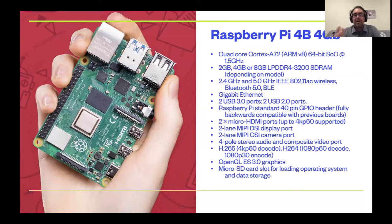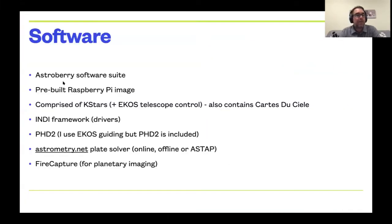The Raspberry Pi is a wonderful little piece of kit — quite incredible to have a fully featured computer in the palm of your hand. Specs and links will be shared after the presentation. The software suite, Astroberry, is a prebuilt image you download onto an SD card, pop into the Pi, and boot up — it comes pre-configured and ready to use. It includes KSTARS and other applications forming a complete observatory control solution.